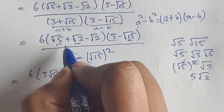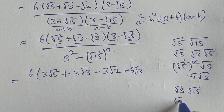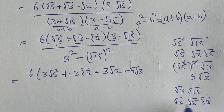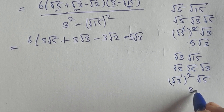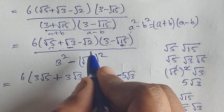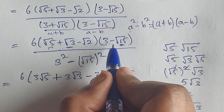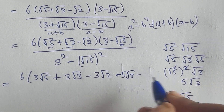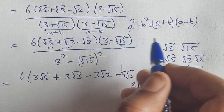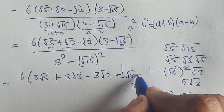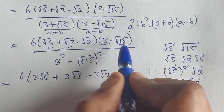Square root of 15 can be written as square root of 3 times square root of 5, so square root of 5 times square root of 15 equals 5 root 3. Similarly, square root of 3 times square root of 15: since root 15 equals root 3 times root 5, the root 3 squares cancel, giving 3 root 5. And square root of 2 times square root of 15 equals square root of 30, since 2 times 15 is 30. So the sign becomes minus minus plus, giving plus square root of 30.